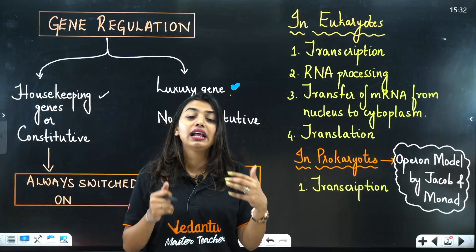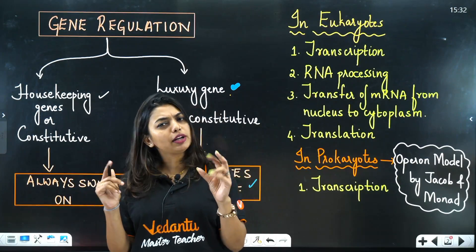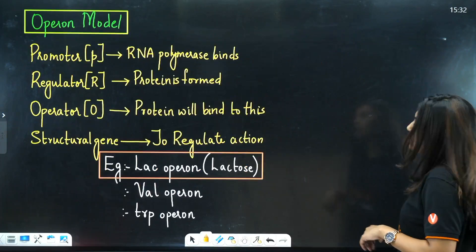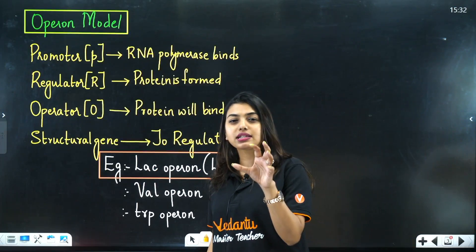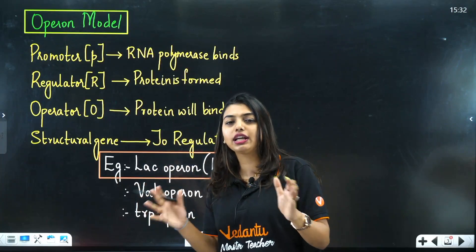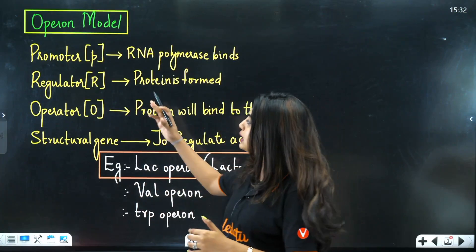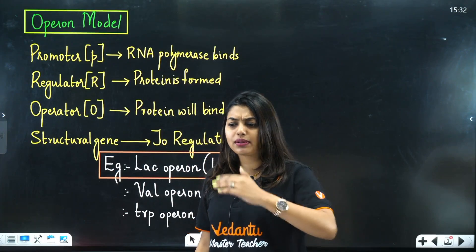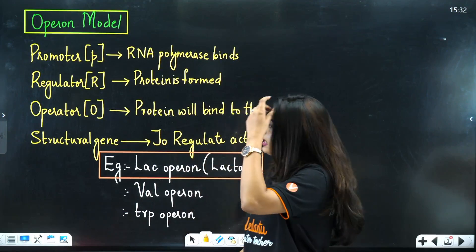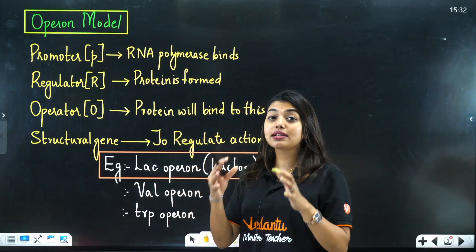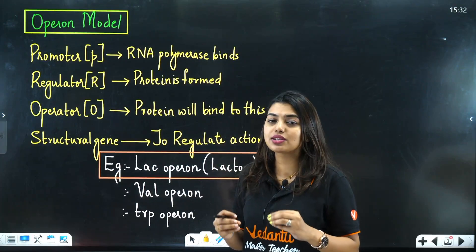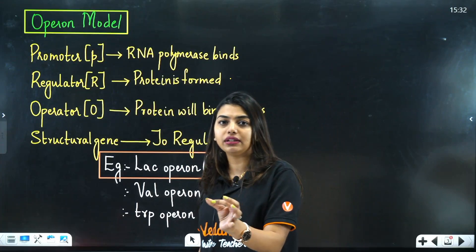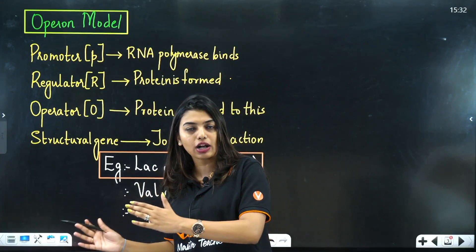They noticed that many genes are regulated by a common mechanism. In the operon model, there is a promoter region where RNA polymerase binds — it recognizes this as the starting point. Then there is a regulator, which is the main controlling element responsible for regulating the whole system.